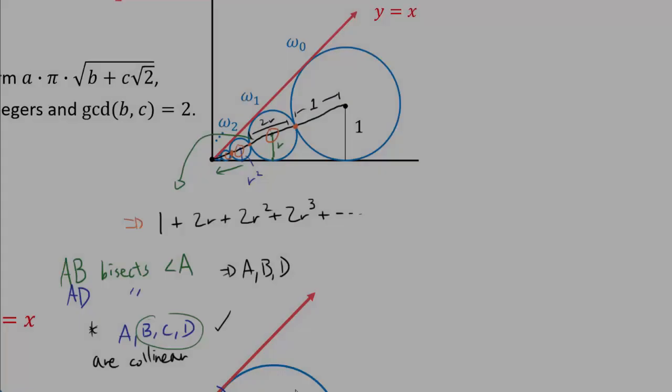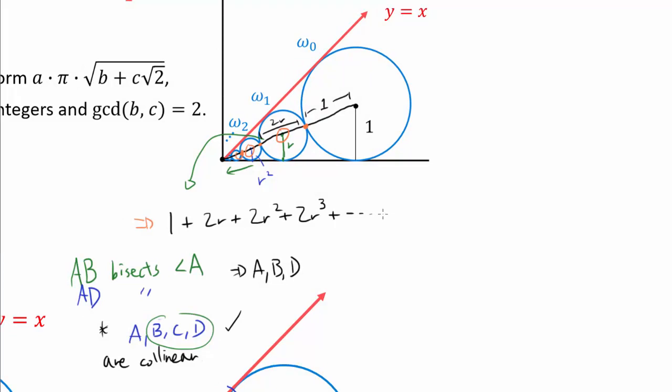So let's go on. So we know 1 + 2R + 2R² + 2R³. Well, we have 1 and that's a geometric series with the first term of 2R and the common ratio of R. So A over 1 minus R gets us 2R over 1 minus R.